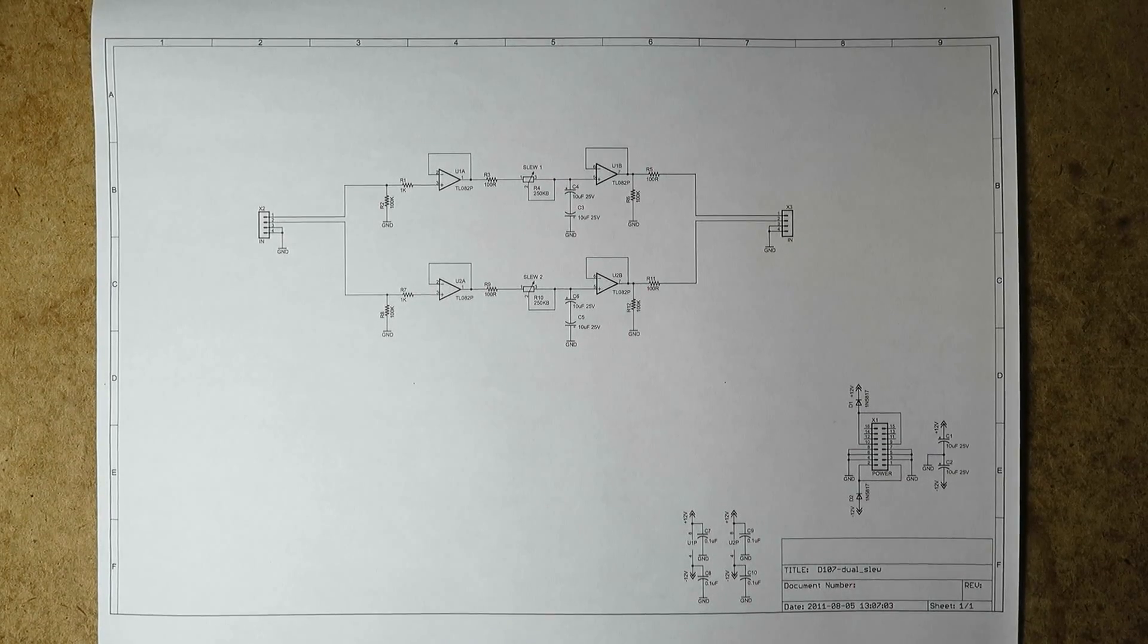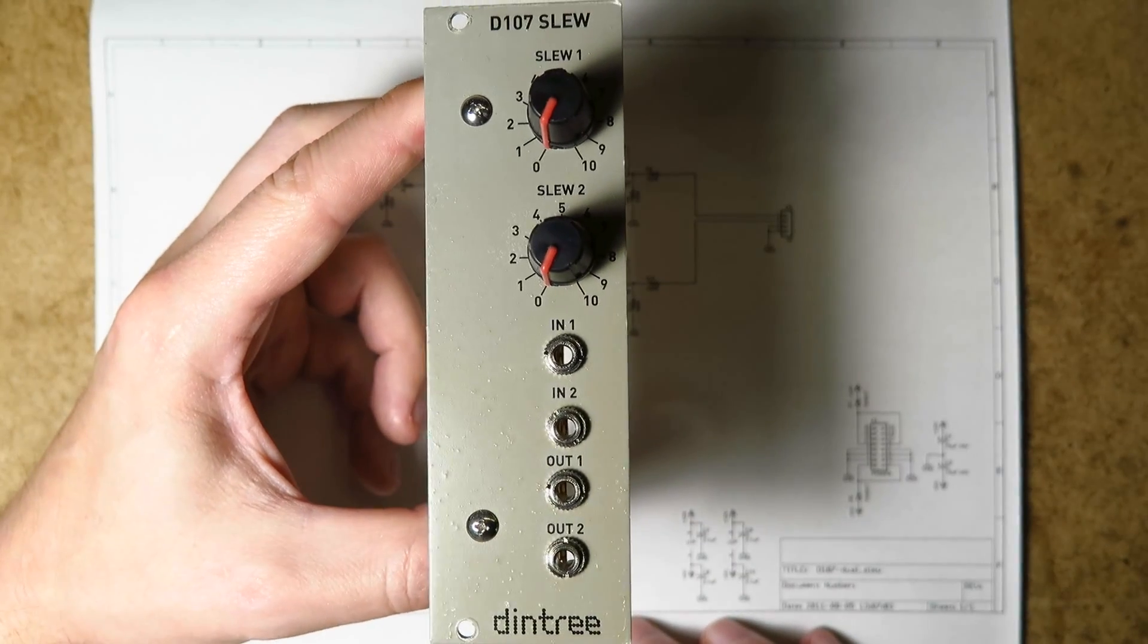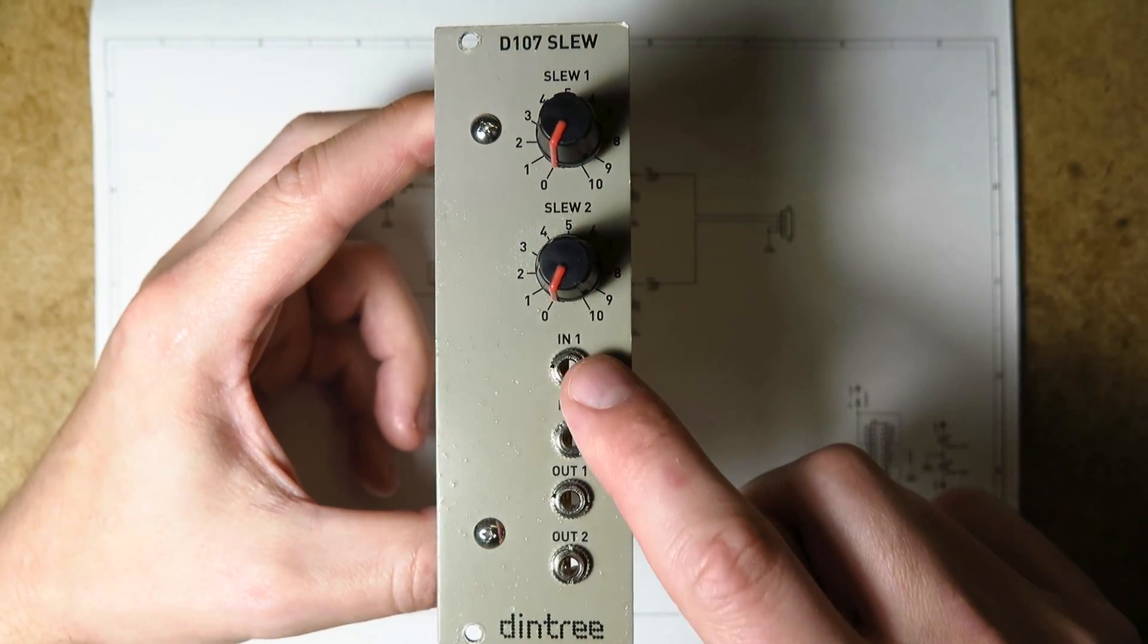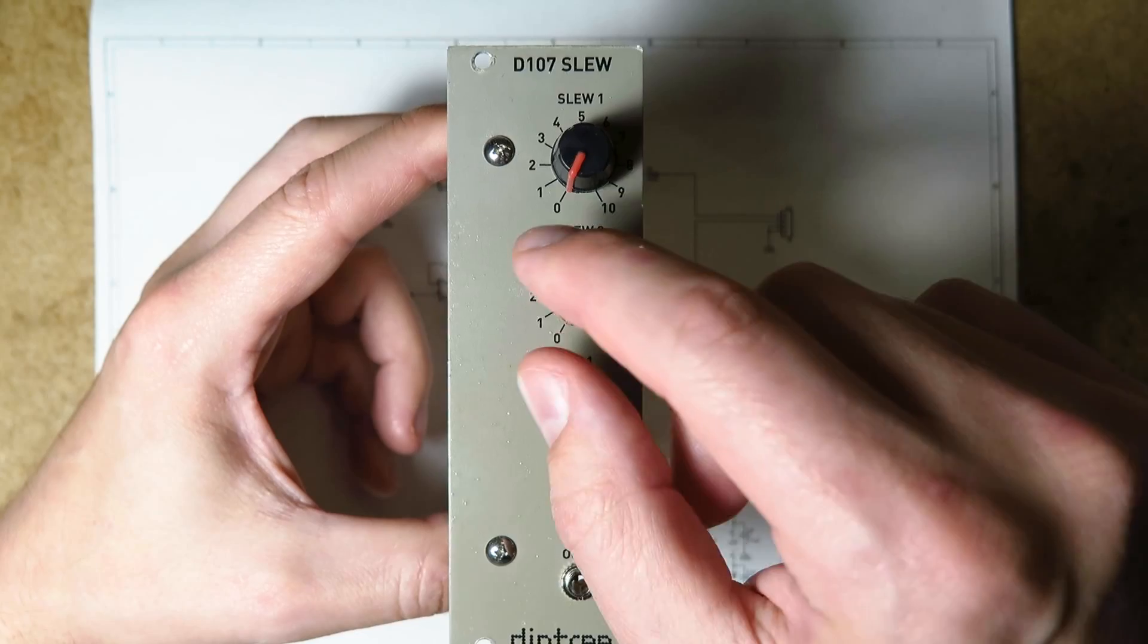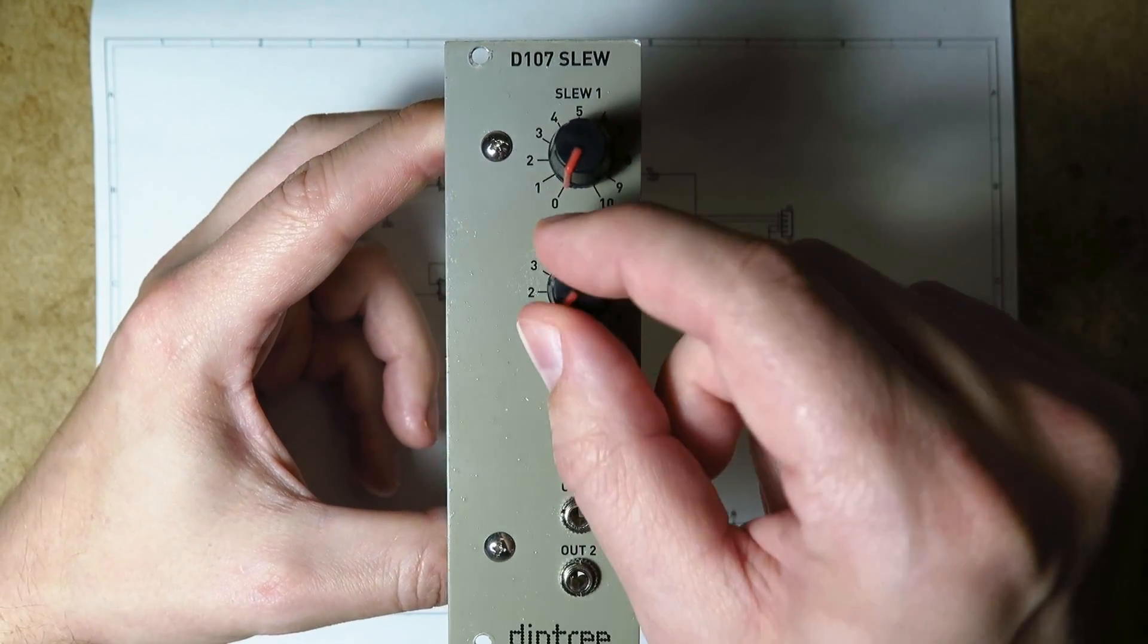Hey folks, it's Andrew here and today I'd like to tell you about the D107 Dual Slew. This is a dual slew limiter that takes an input signal and makes an output signal, letting you adjust how fast that signal tracks, how the output tracks the input.